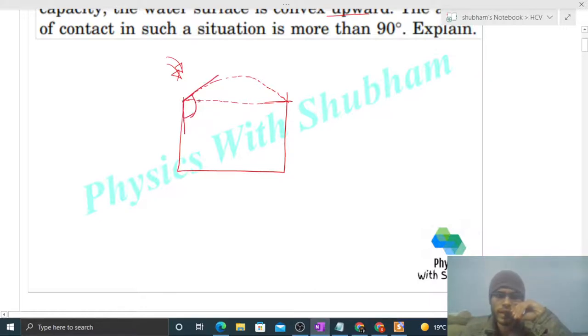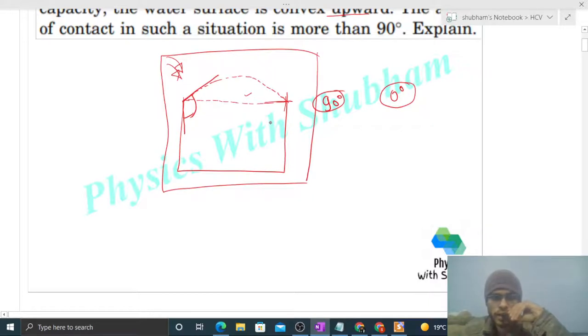And this is more than 90 degrees. Generally, the angle of contact between water and glass is zero degrees. So what we can conclude from this situation is that the contact angle can adjust itself in some special situations.